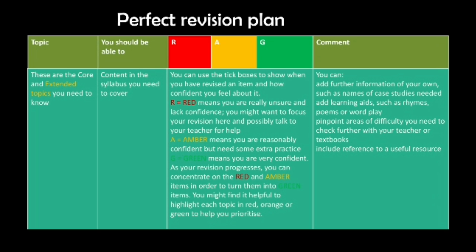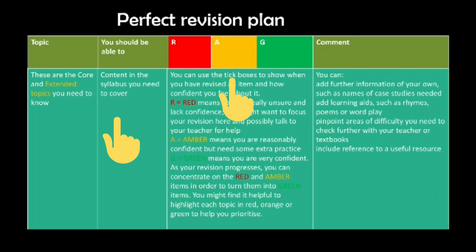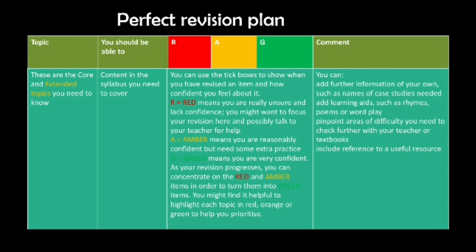As you can see, there are four columns. The first column is Topic, the second column is 'You Should Be Able To', the third column has three colors — red, amber, and green — and the fourth one is Comment. I'm going to tell you what is the meaning of each one of them.